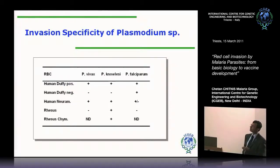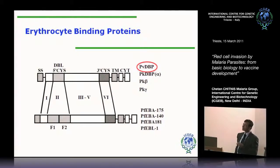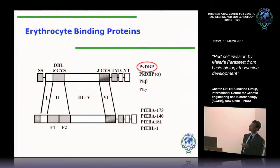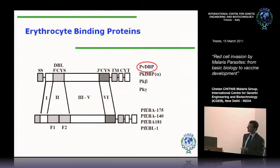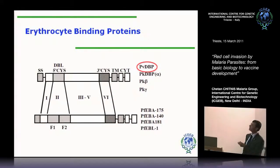Duffy antigen is used by vivax and Nolzi for invasion into human red cells, and sialic acids on glycophorins are used by falciparum, though there could be other receptors. Once these receptors were identified, the parasite proteins that bind these receptors were identified — referred to as erythrocyte binding proteins — and the genes were cloned. One protein from vivax is referred to as the Duffy binding protein because it binds the Duffy antigen. Three related genes were found from Nolzi: alpha encoding the Duffy binding protein, and beta and gamma which are homologs that bind other receptors. Vivax has only one, and binding to the Duffy antigen is essential for vivax.